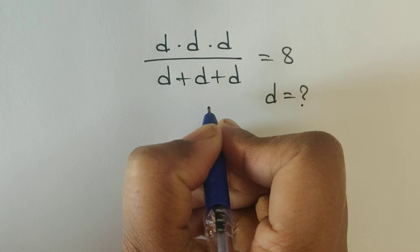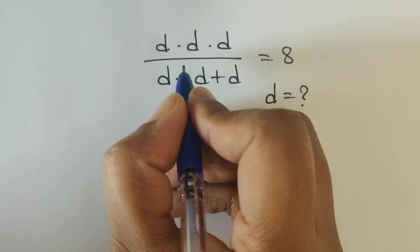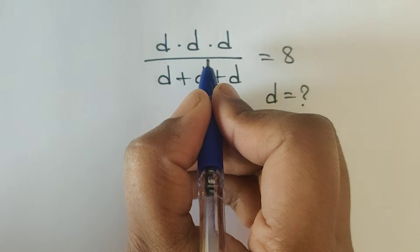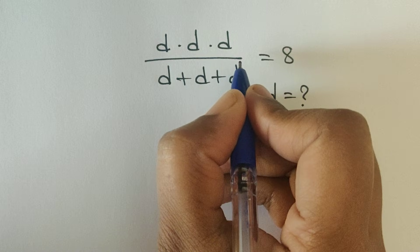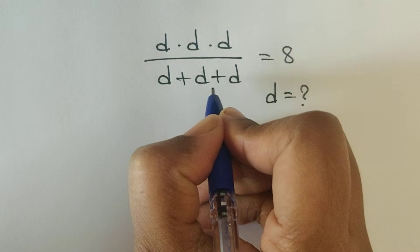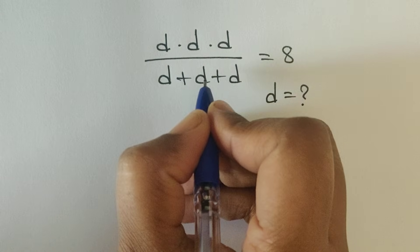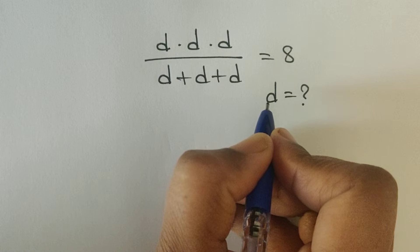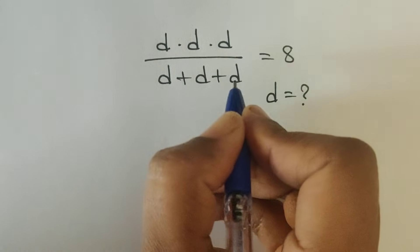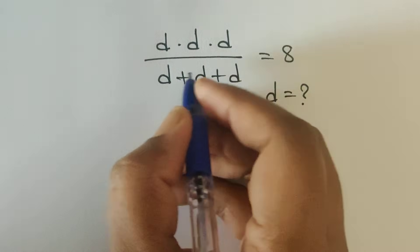Hello everyone, welcome back to our channel. Here we have one problem: d times d times d, divided by d plus d plus d, is equal to 8. In this problem we have to find the value of d. So how do we solve this problem? Let's see.